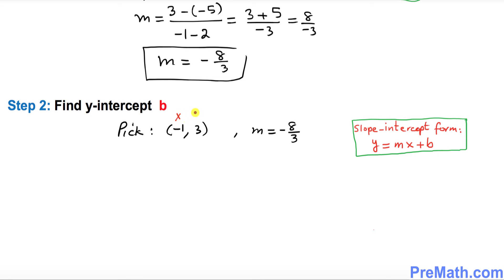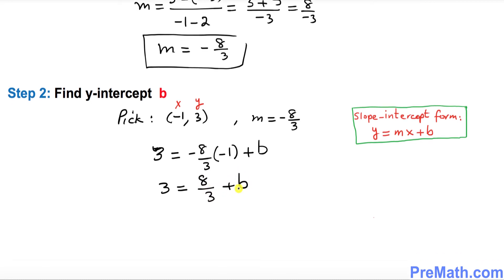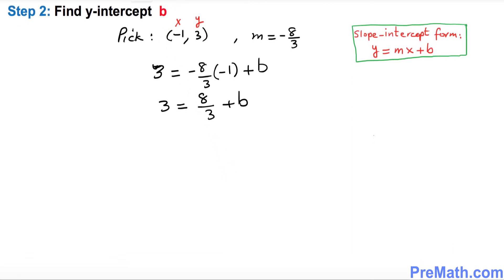Fill in the blanks: y is 3, equals m which is -8/3, times x which is -1, plus b (which we don't know yet). So 3 equals negative times negative, which becomes positive 8/3, plus b. Now we want to isolate b, so subtract 8/3 from both sides — the 8/3 terms cancel.